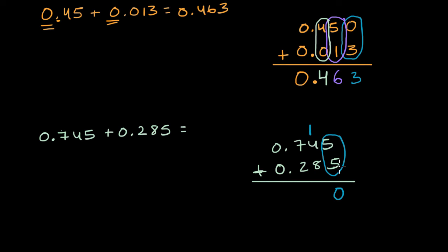Some people might say, hey, five plus five is 10, right, the zero carry the one. But what's really going on here is you're saying five thousandths plus five thousandths is 10 thousandths. 10 thousandths is one hundredth and zero thousandths is another way to think about it.